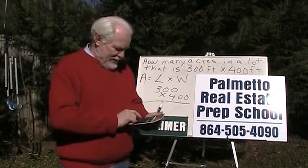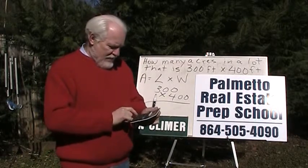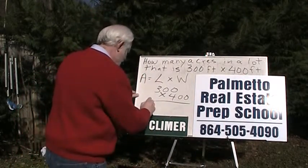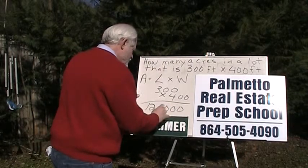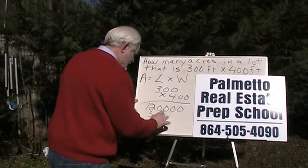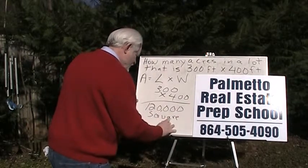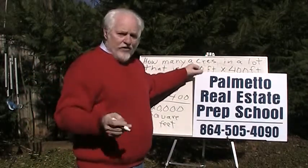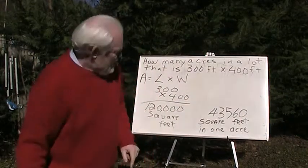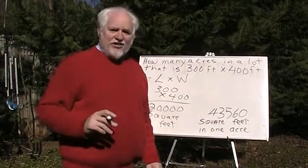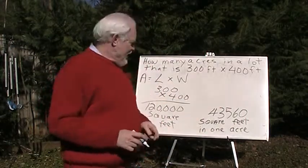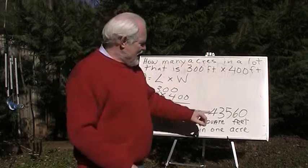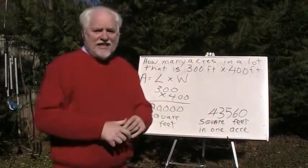300 by 400 — that lot is 120,000 square feet. Now, the next thing, and I assume if you're in real estate school you have this memorized, is that there are 43,560 square feet in an acre. If you don't have that memorized, you need to memorize it. Go ahead and memorize that: 43,560 square feet in an acre.